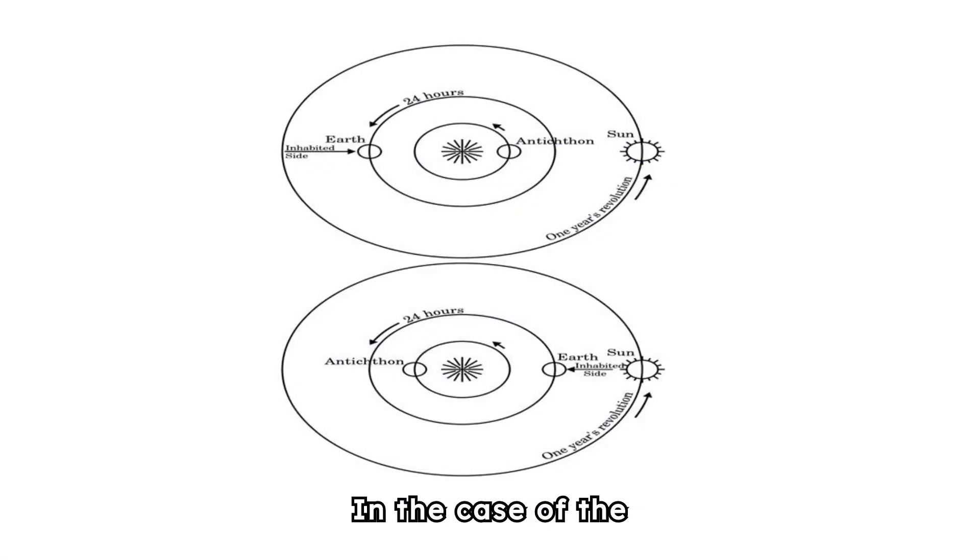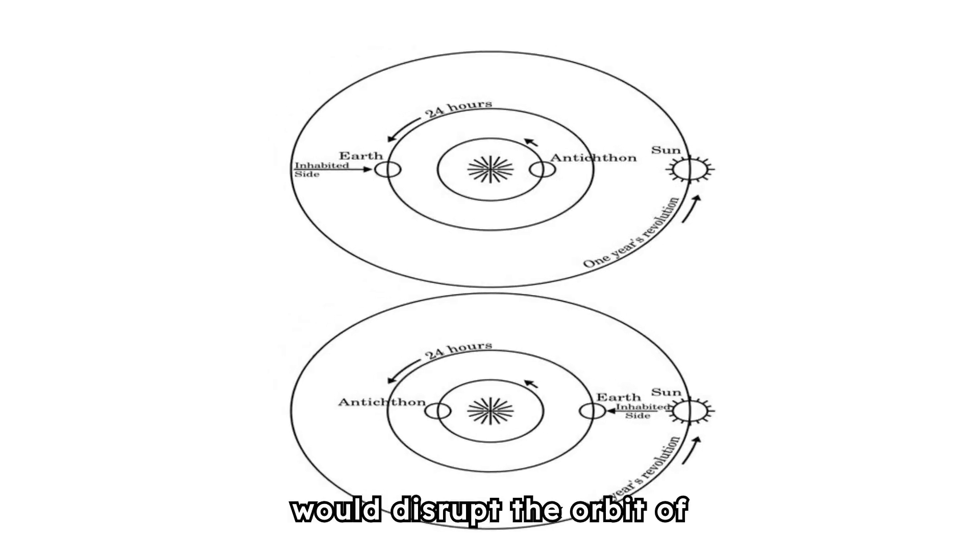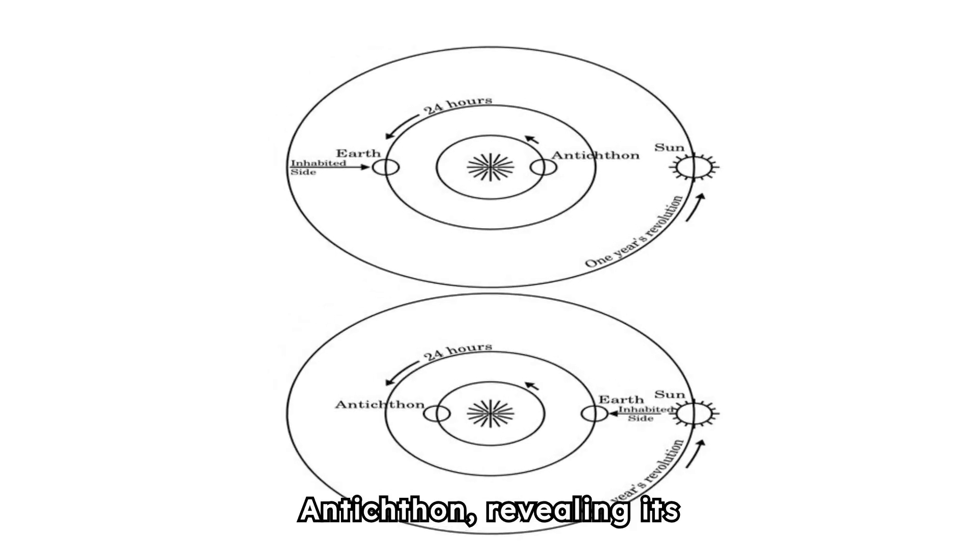In the case of the counter-Earth theory, the gravitational interactions with other solar system bodies would disrupt the orbit of Antikthon, revealing its presence.